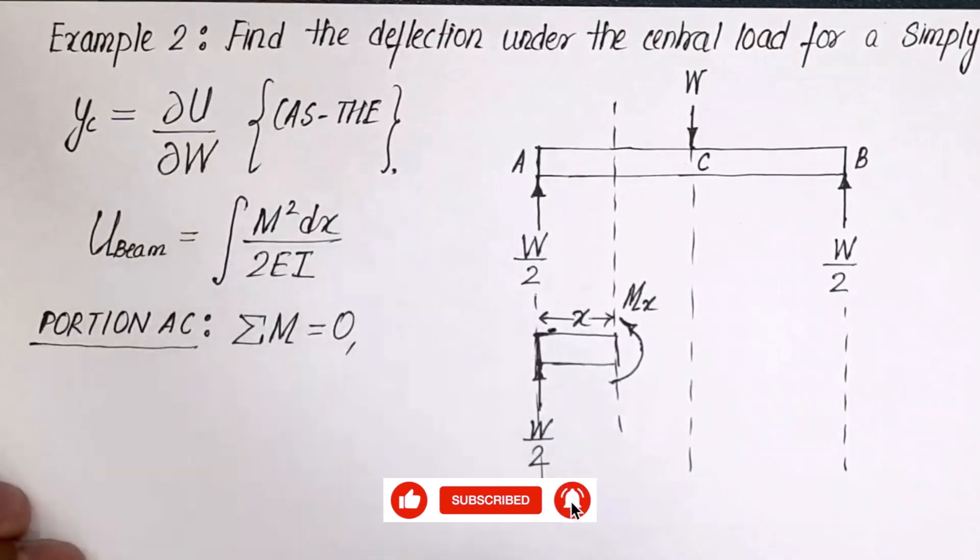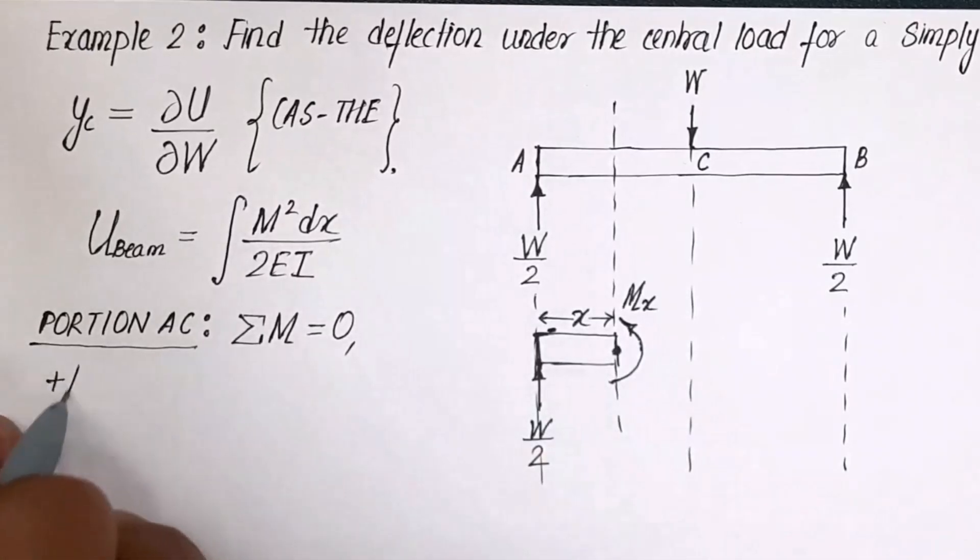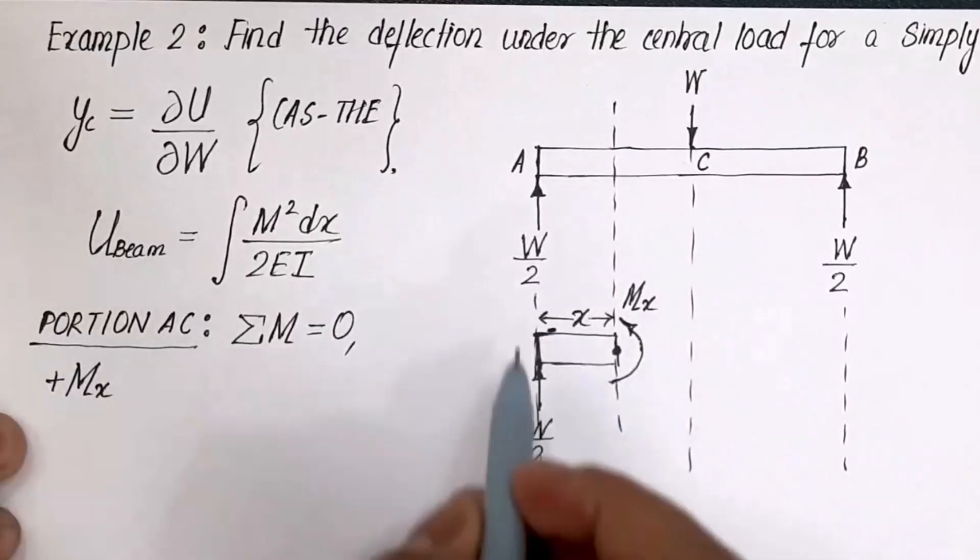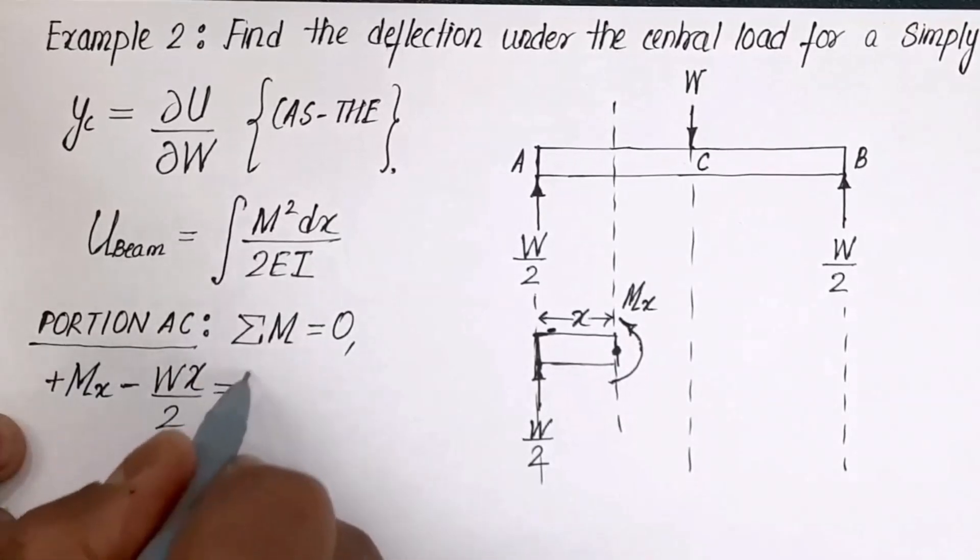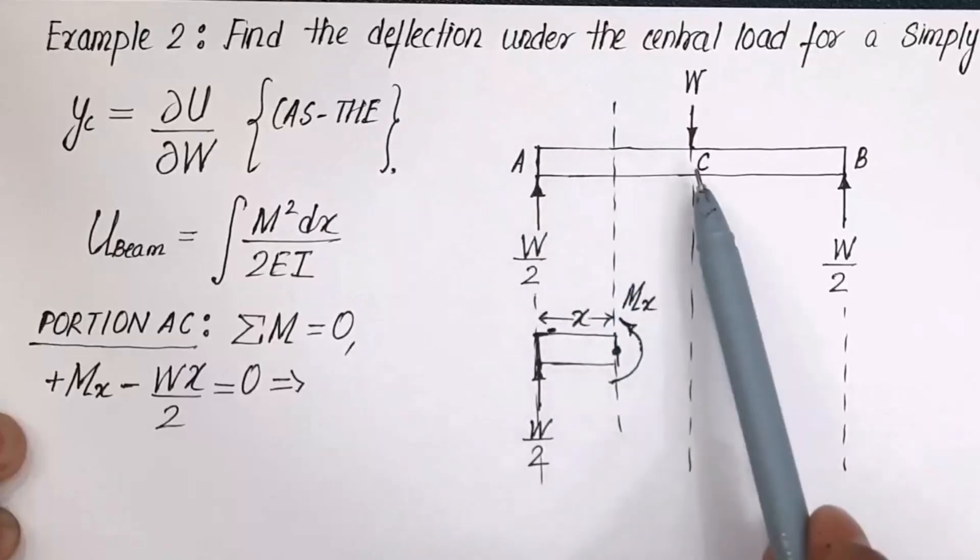When you do that, apply the clock anti-clock concept. Okay, so first of all, at this very section, the moment acting that we've assumed is M_x anti-clockwise, therefore plus M_x. Then you've got this force W by 2 multiplied by x, clockwise moment over here, minus Wx over 2 is equal to 0. Therefore, any point between A and C, if you want to calculate the moment, this is the formula.